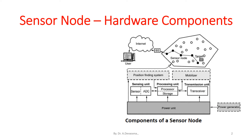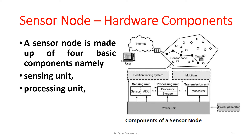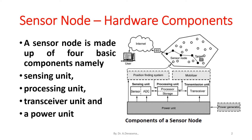Sensor node hardware components. A sensor node is made up of four basic components, namely a sensing unit, processing unit, transceiver unit, and a power unit. It also has application-dependent additional components, such as a location-finding system, a power generator, and a mobilizer.